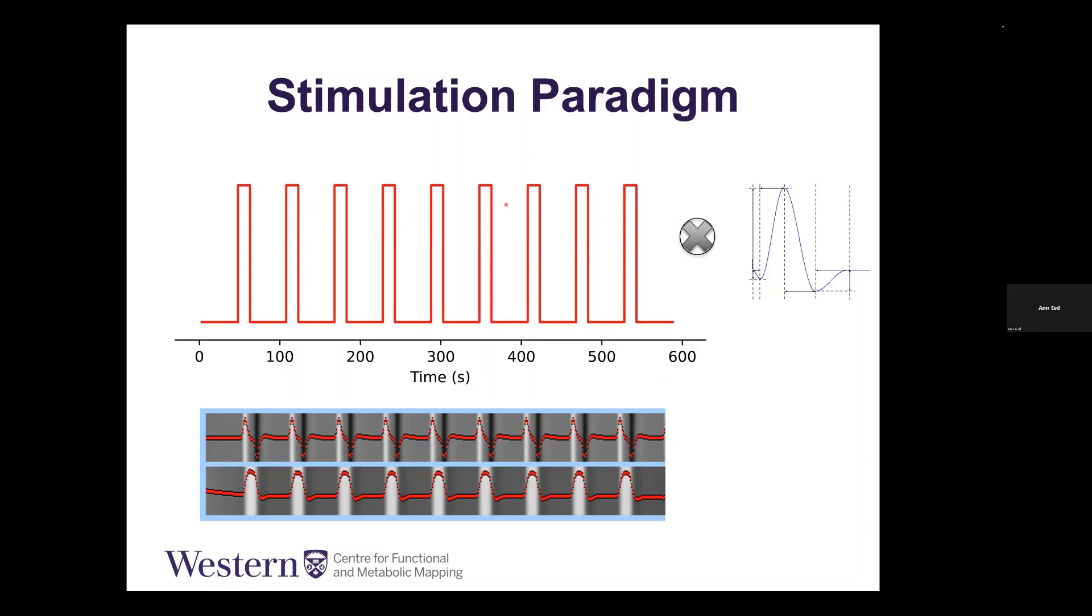After we do the pre-processing, how do we check if the brain has activation or not? We take our block design, convolve it with our canonical HRF double gamma function, and we get some regressors like this. Then we check each time series in each voxel and fit these regressors over the time series. Based on this, we get a value saying whether this voxel's fitting is significant or not. Significant voxels are deemed active and non-significant voxels inactive. We're searching for this pattern in the time series, and based on this we decide if the region is activated or not.